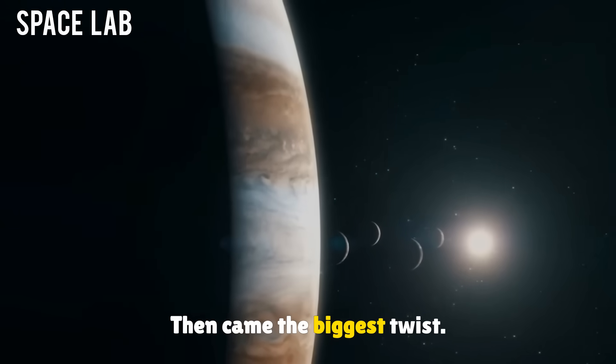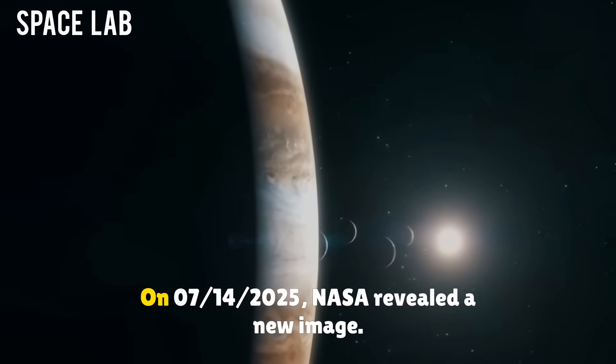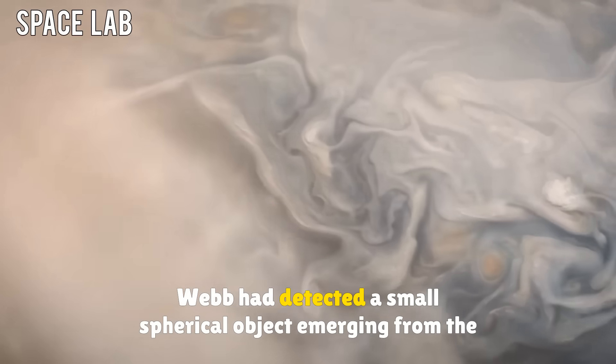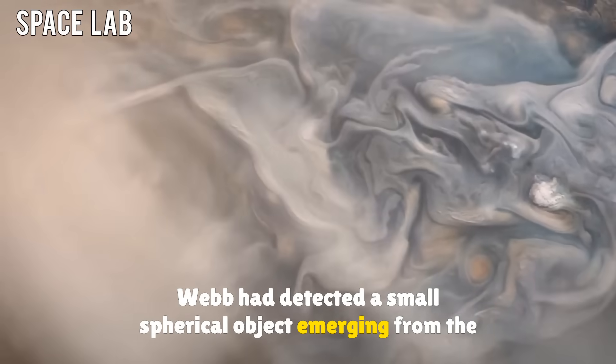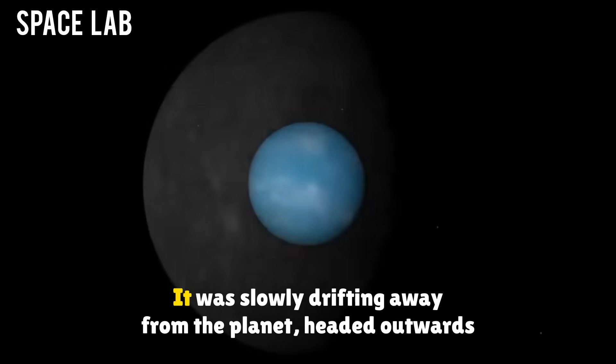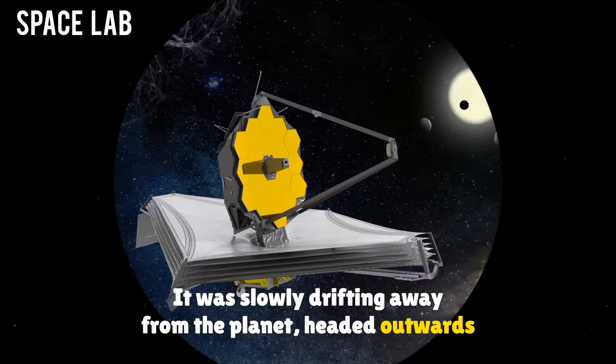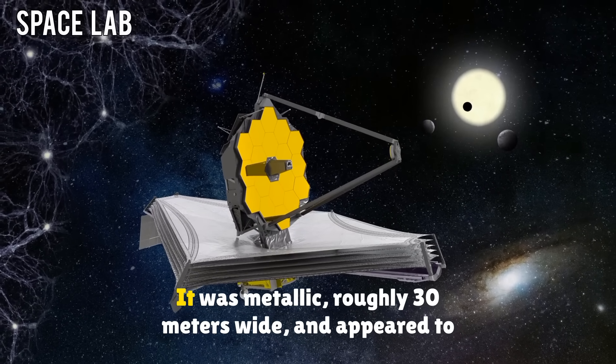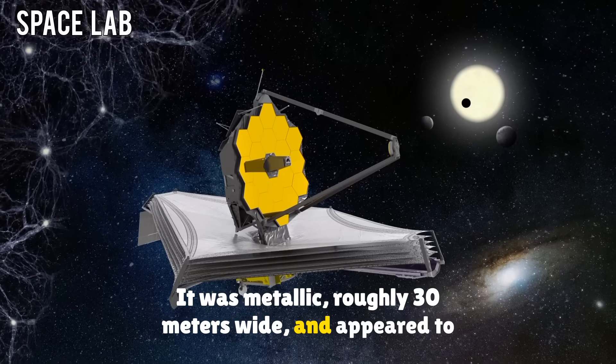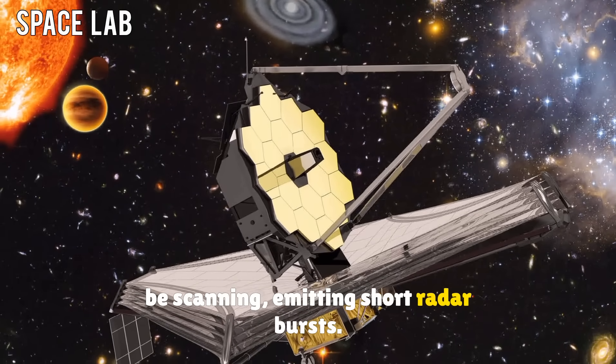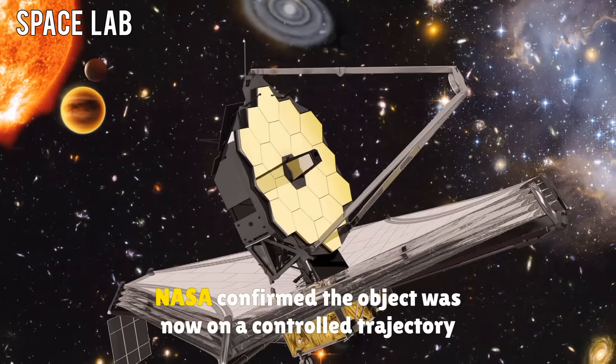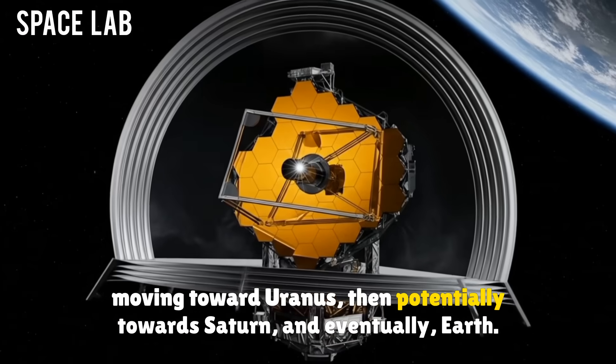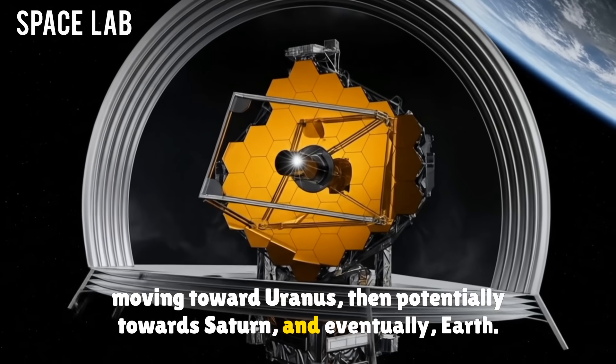Then came the biggest twist. On July 14, 2025, NASA revealed a new image. Webb had detected a small spherical object emerging from the structure inside Neptune. It was slowly drifting away from the planet, headed outward toward space. It wasn't a meteor fragment. It was metallic, roughly 30 meters wide, and appeared to be scanning, emitting short radar bursts. NASA confirmed the object was now on a controlled trajectory, moving toward Uranus, then potentially toward Saturn, and eventually Earth.